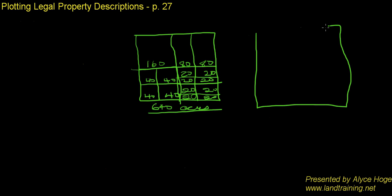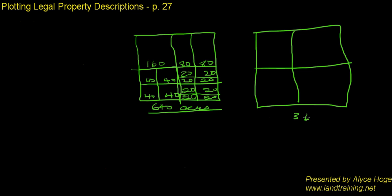Now let's look at how we try to find a particular plot of land in a section — let's say this is Section 36. The way we start is we use this grid and define the different quadrants or corners of that grid. I usually think about the United States: the northeast corner, the southeast like Florida, the northwest like Portland, Oregon, and the southwest like Arizona. Whenever we describe a property in a legal description, we're going to use these quadrants as a guide.